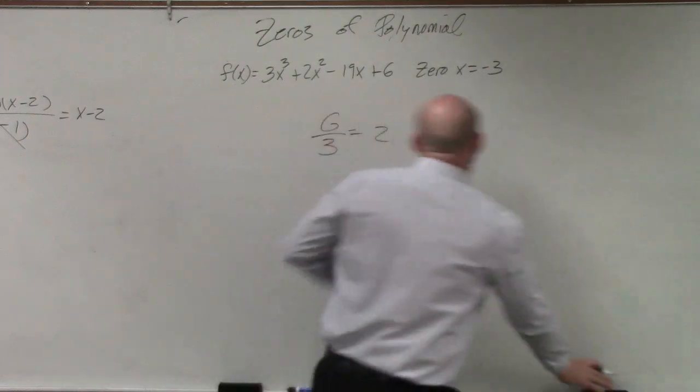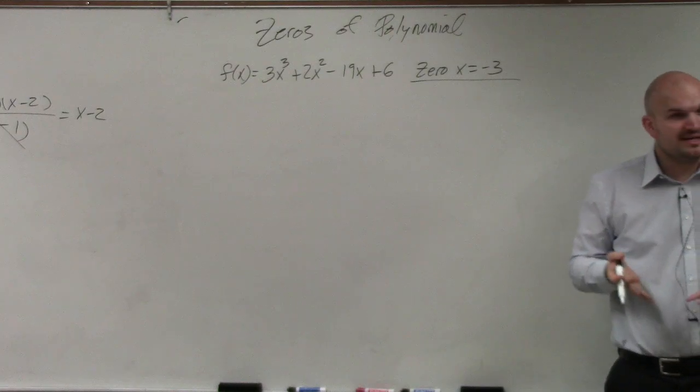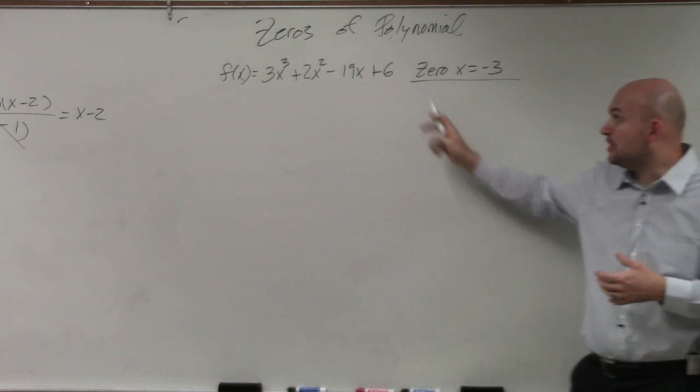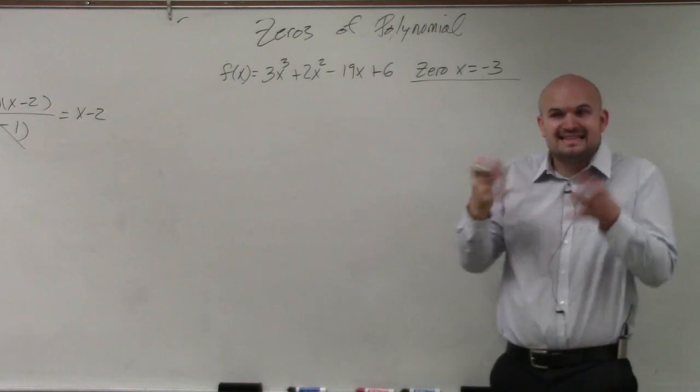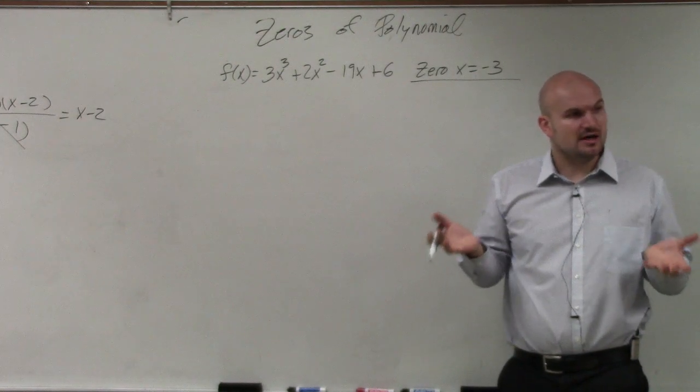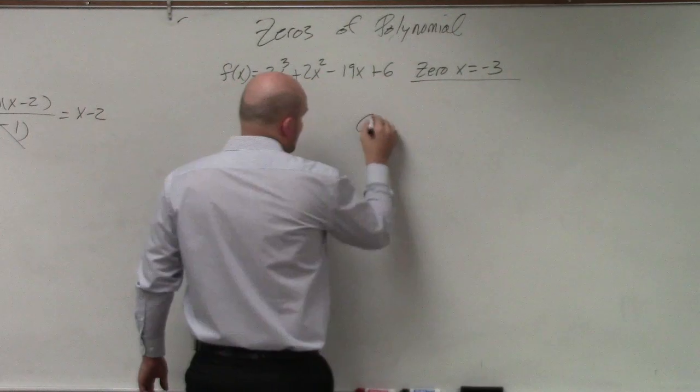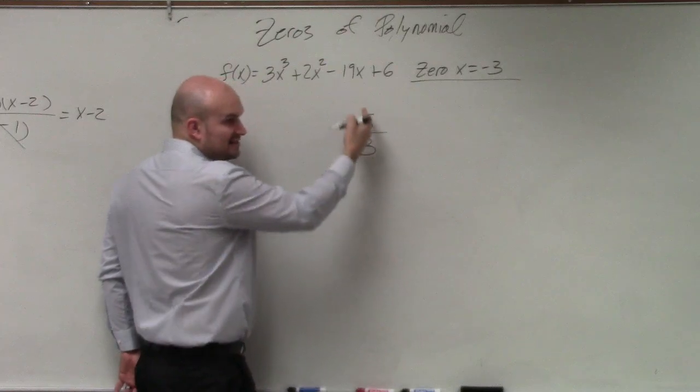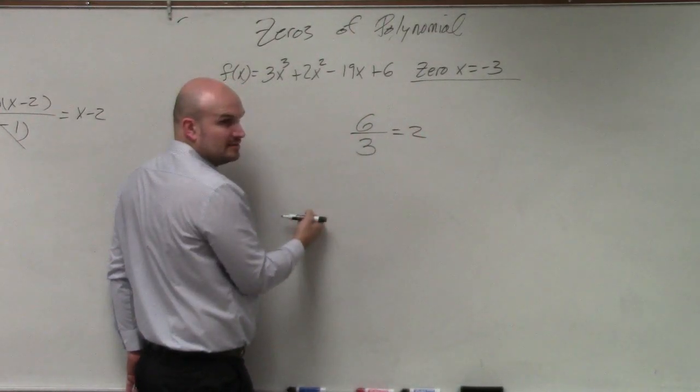So that means the quotient of that is also a factor. So when I tell you or I give you a zero, what that means is I can divide that zero into this, because it's going to evenly divide. And then the answer is also going to be a factor of the polynomial. Again, if you give something that's a factor and you divide it into it, the answer is also a factor.